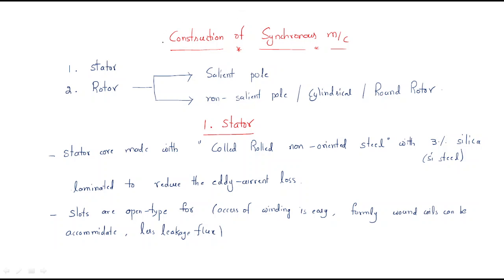Hello everyone. In this session we will discuss the construction of synchronous machines. Generally, any rotating machine — DC, induction, or otherwise — has two parts: one is the stator, which is the stationary part, and another one is the rotor.